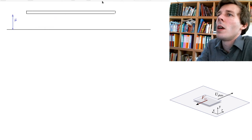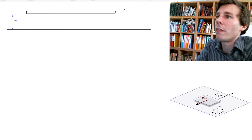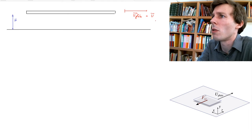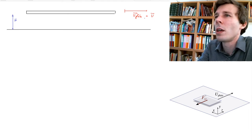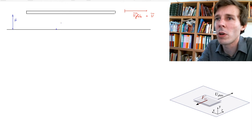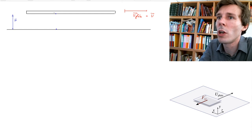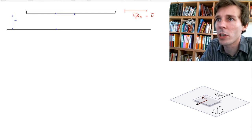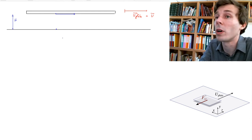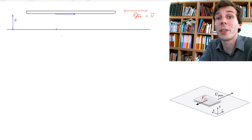In between those two surfaces we have a height H of one millimeter. The plate is moving at a velocity called U. The fluid in between those two bodies is stuck — it is stuck to the ground on the bottom and stuck to the plate on top. Because of the no-slip condition, we have velocity U on top and zero velocity on the bottom.